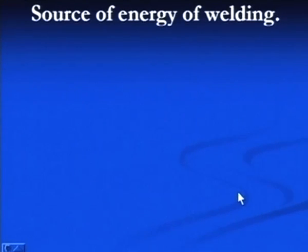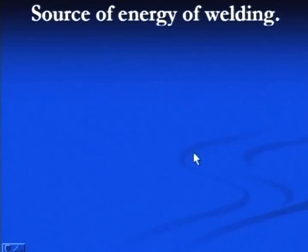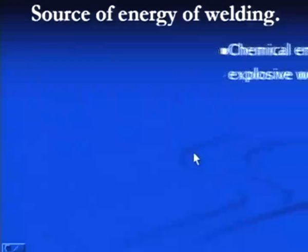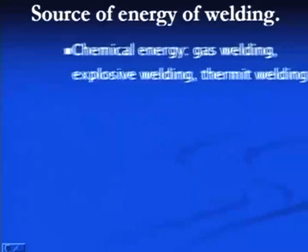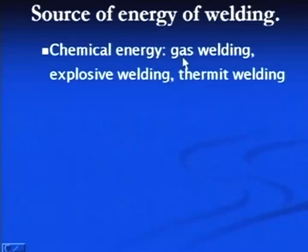Classification based on the type of energy used for producing the weld joint shows that chemical energy is used in gas welding, explosive welding, and thermite welding.